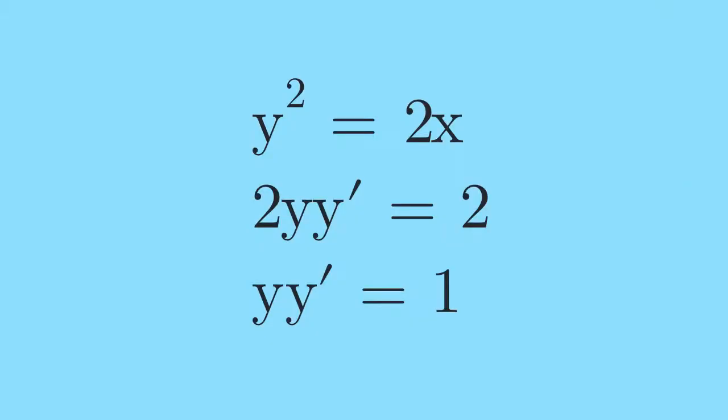In calculus, we determine the equation of a line tangent to a given parabola at a specific point by differentiating the equation of the parabola to first order. In this problem, the first derivative of y squared equals 2x is yy' equals 1.